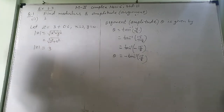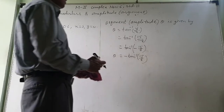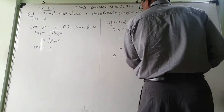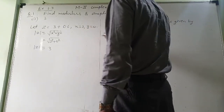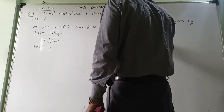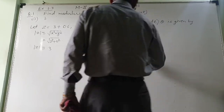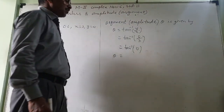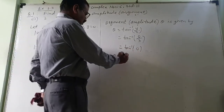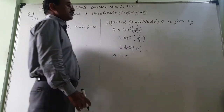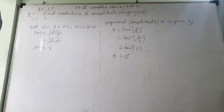Now I want the argument. Amplitude θ = tan⁻¹(y/x) = tan⁻¹(0/3) = tan⁻¹(0) = 0. So θ = 0 degrees. Hope that you have understood this.